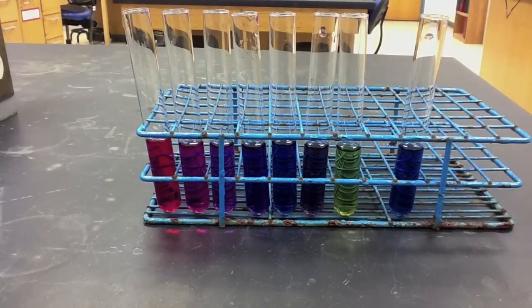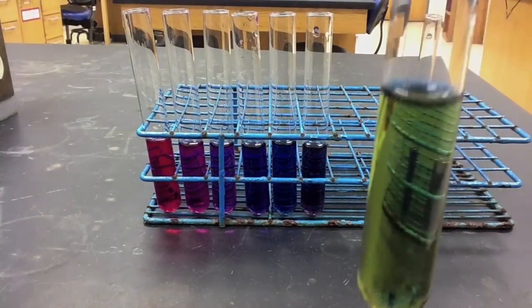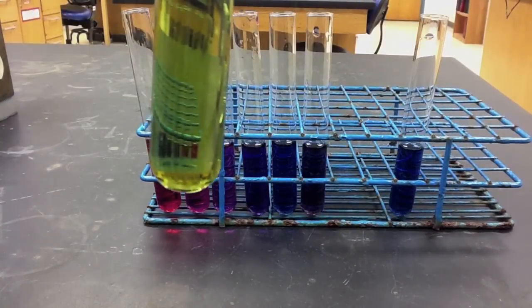Notice that the pH 12 buffer and anthocyanin mixture initially started out as a dark green color at the beginning, but then slowly faded to a light yellow color.